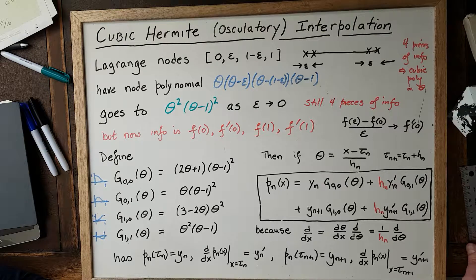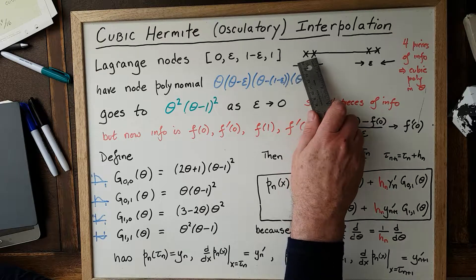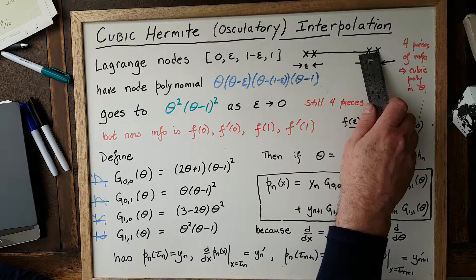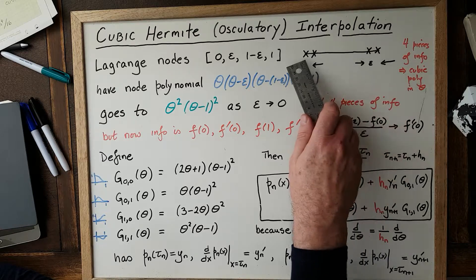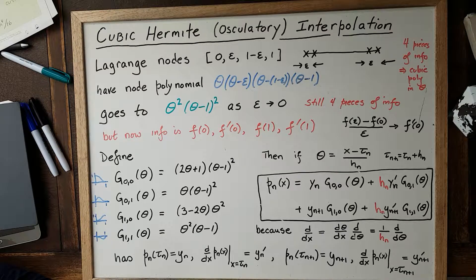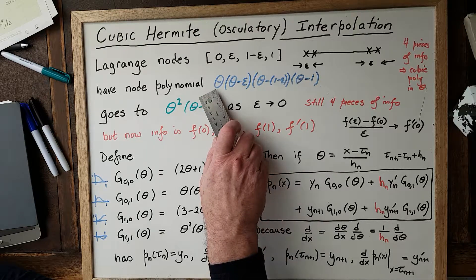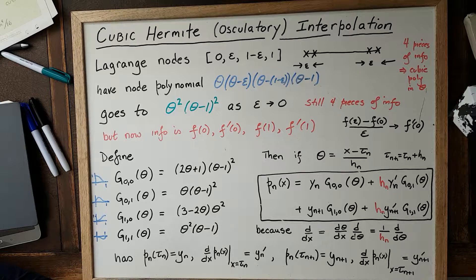Suppose we have four Lagrange nodes at theta equals zero, theta equals epsilon, theta equals one minus epsilon, and theta equals one. We'd have four function values at those points, giving us enough information to fit a cubic polynomial in theta — four coefficients. That would give us the node polynomial: theta times (theta minus epsilon) times (theta minus (1 minus epsilon)) times (theta minus 1), a degree-four node polynomial.